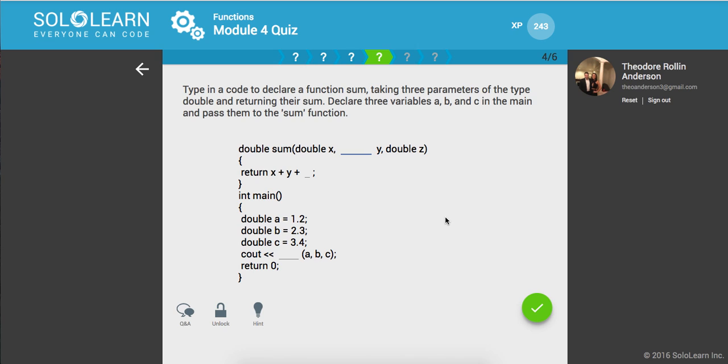Type in the code to declare a function sum taking three parameters of the type double and returning their sum. Okay, so double x, double y, double z, and we just want to return it. Okay, and finally we want to print out this function with a, b, and c.